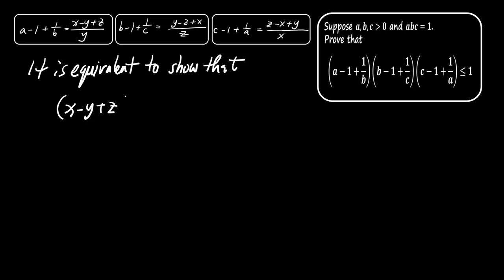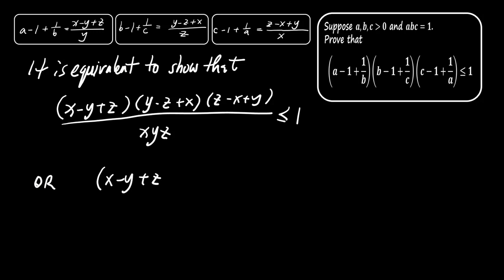We now need to prove that the product of the three terms. First, x minus y plus z divided by y. Second, y minus z plus x divided by z. And third, z minus x plus y divided by x is less than or equal to 1. Next, we will see how to approach this.